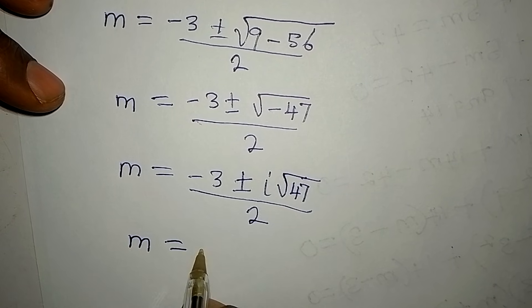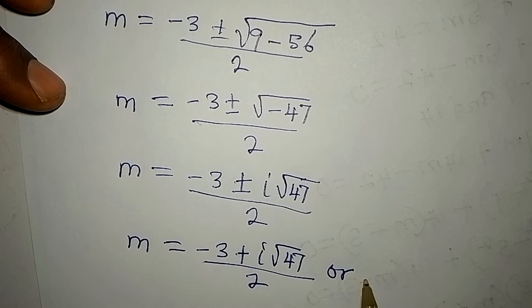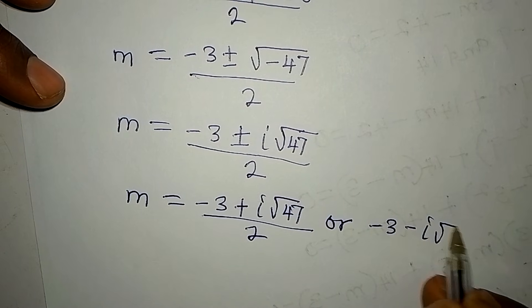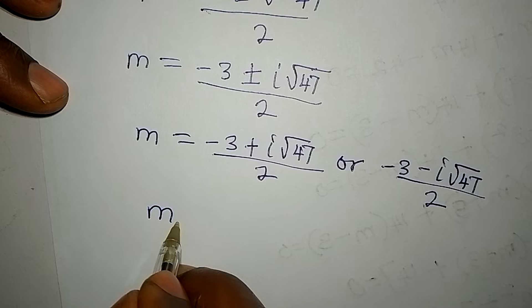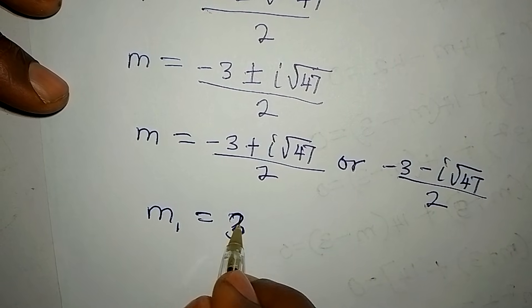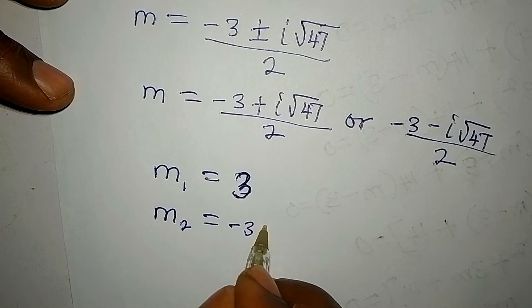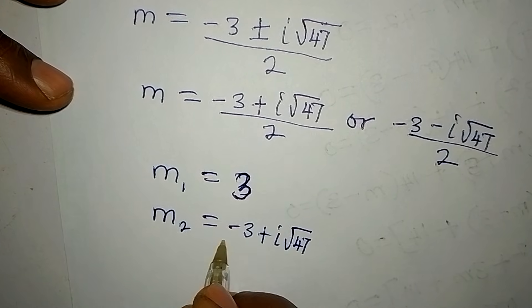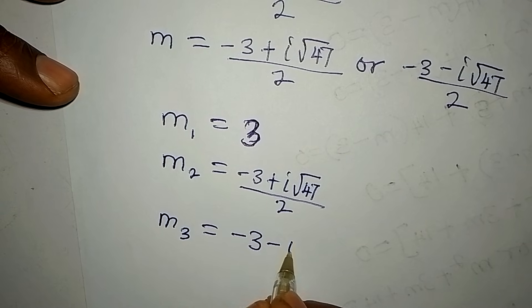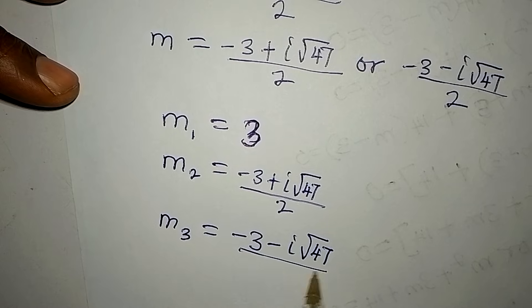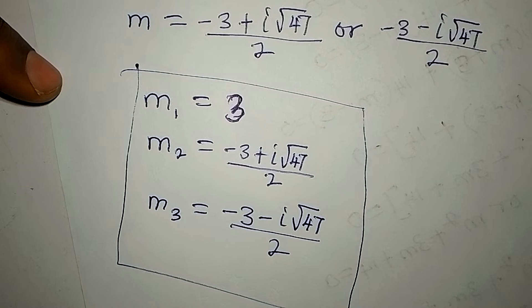This is a two-in-one solution. Bringing all three solutions together: m₁ = 3, m₂ = (−3 + i√47) / 2, and m₃ = (−3 − i√47) / 2. So from here we have our three solutions. Thank you for watching — if you love this video, please subscribe to my channel.